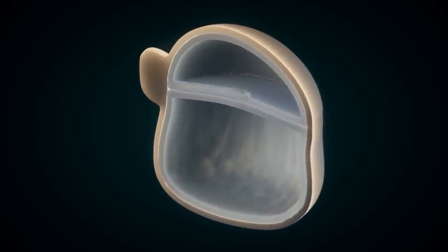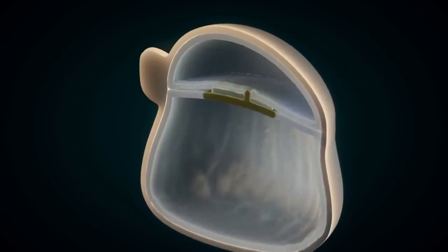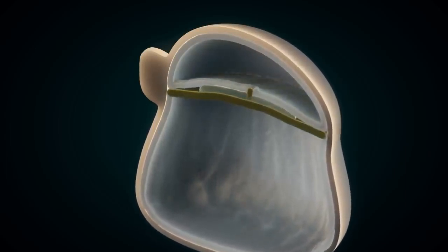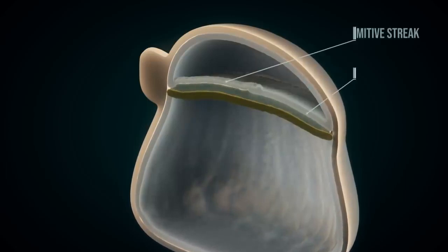Three germ layers form from the primitive streak and node. This process is called gastrulation. The germ layers ectoderm, mesoderm, and endoderm eventually differentiate into various tissues and organs.